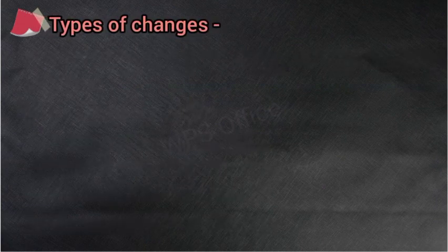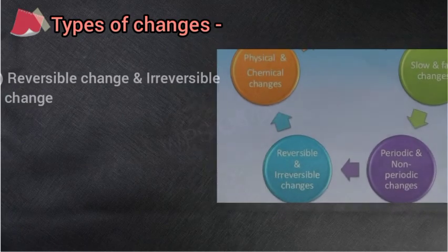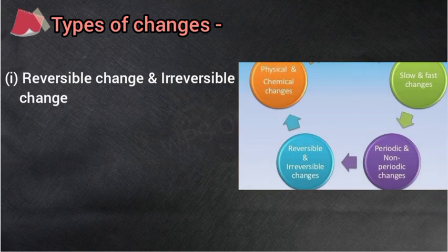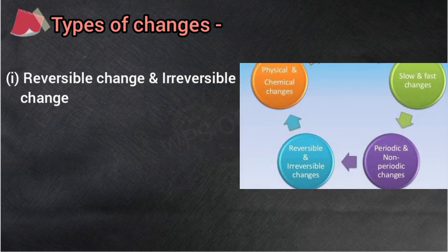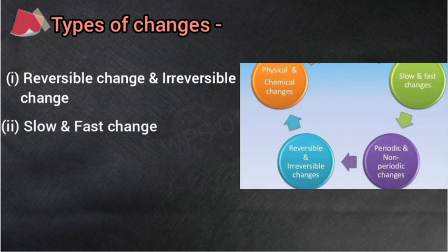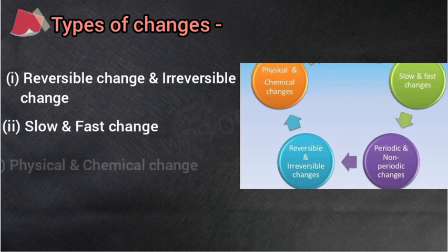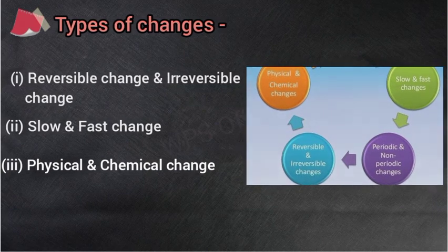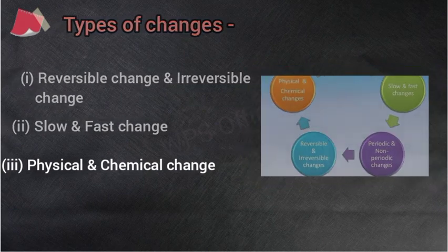And the next — types of changes. परिवर्तन के प्रकार — परिवर्तन कई प्रकार के होते हैं: reversible and irreversible change — यानि उत्क्रमणीय और अनुत्क्रमणीय परिवर्तन; slow and fast change — मंद और तीव्र परिवर्तन; physical and chemical change — भौतिक और रासायनिक परिवर्तन.